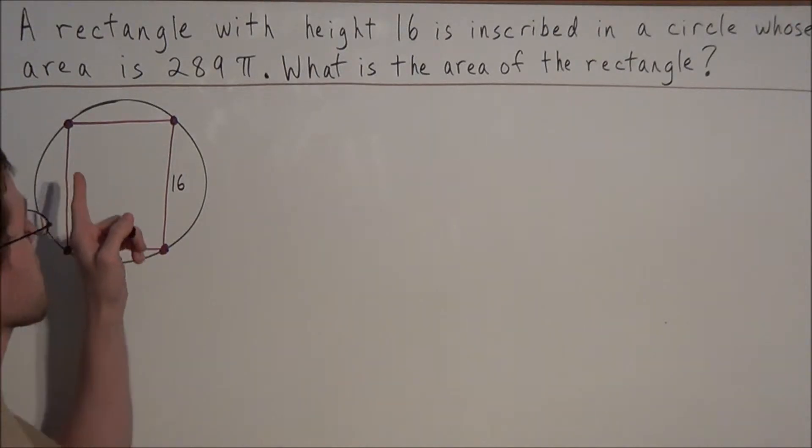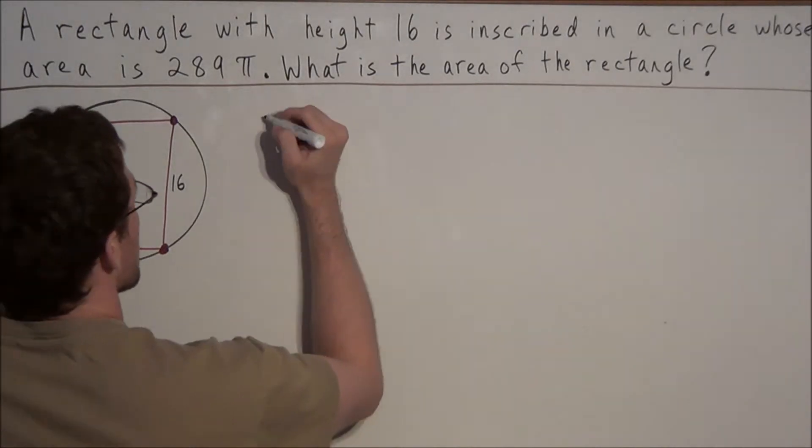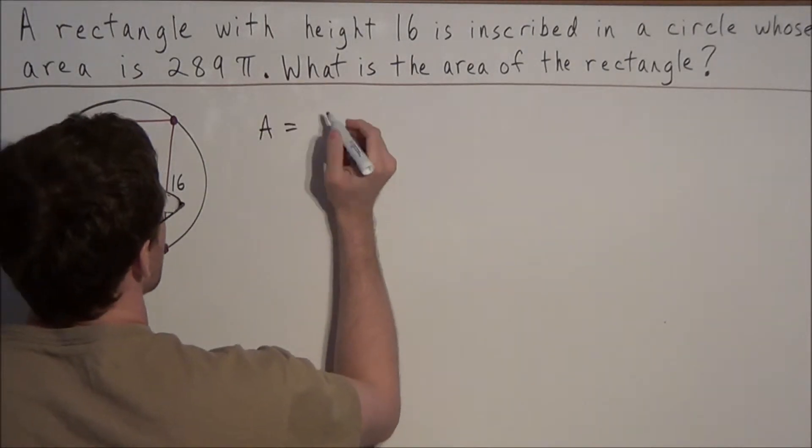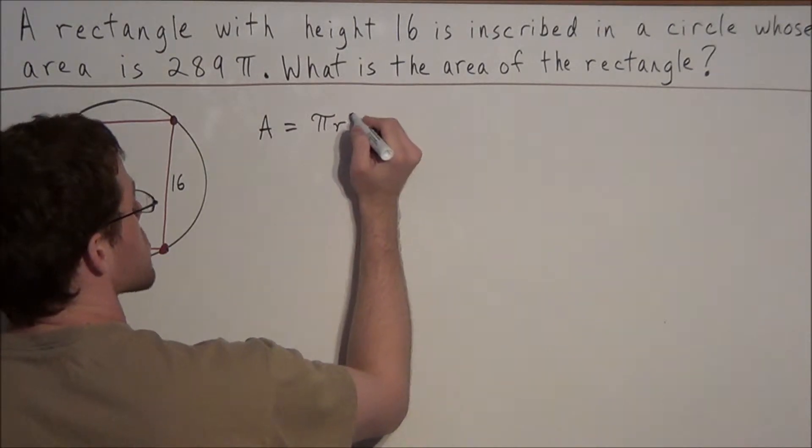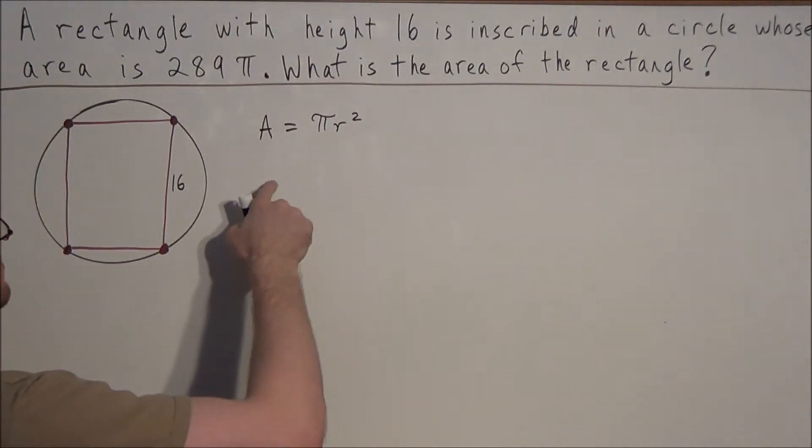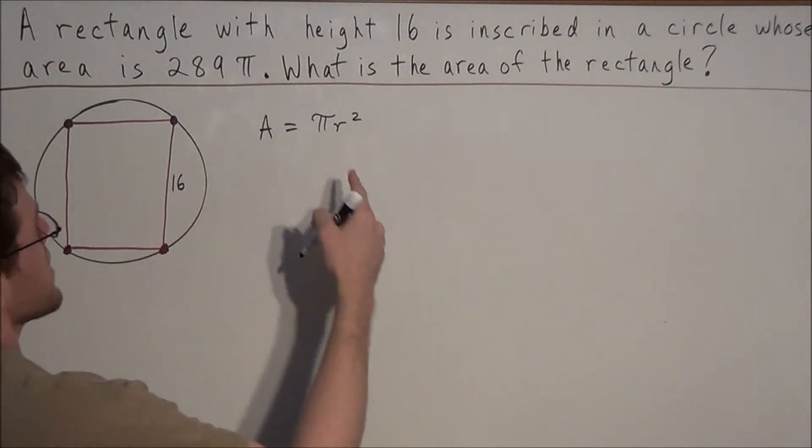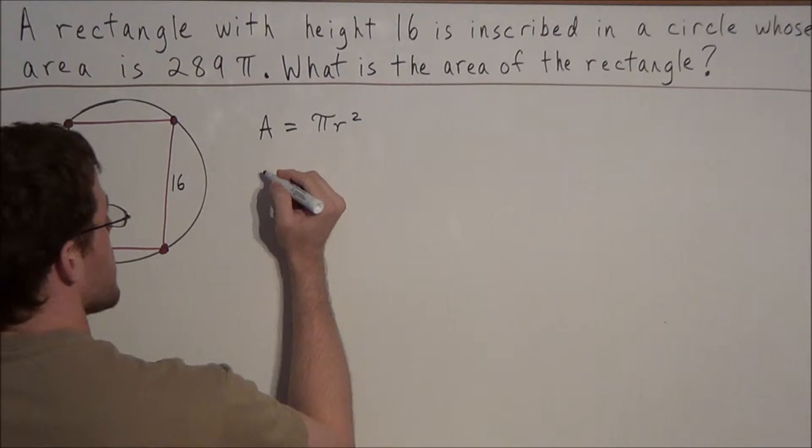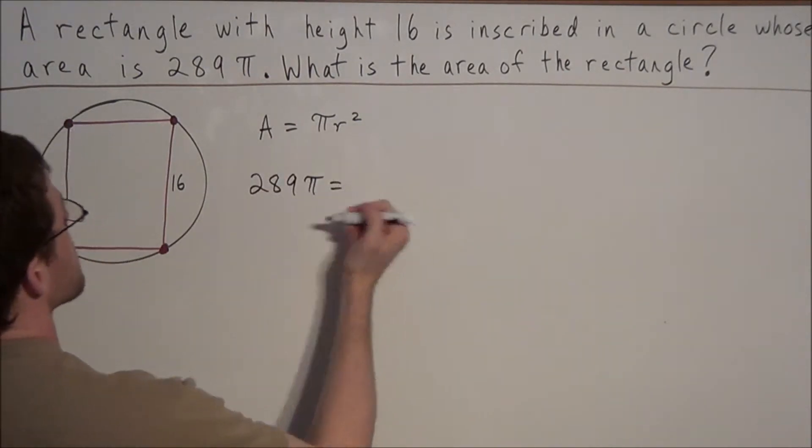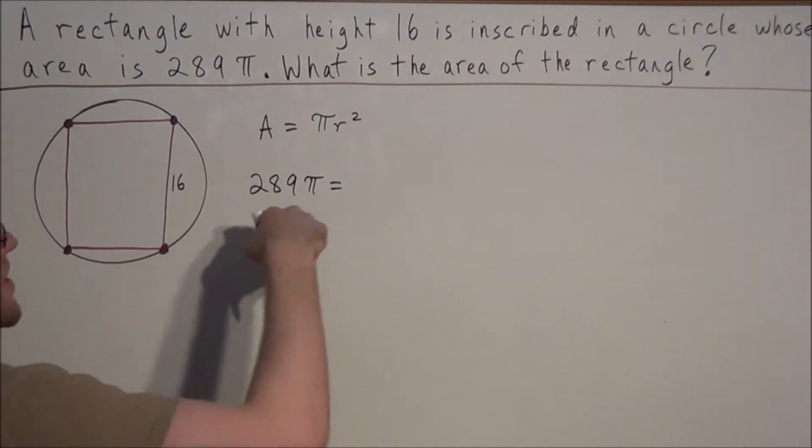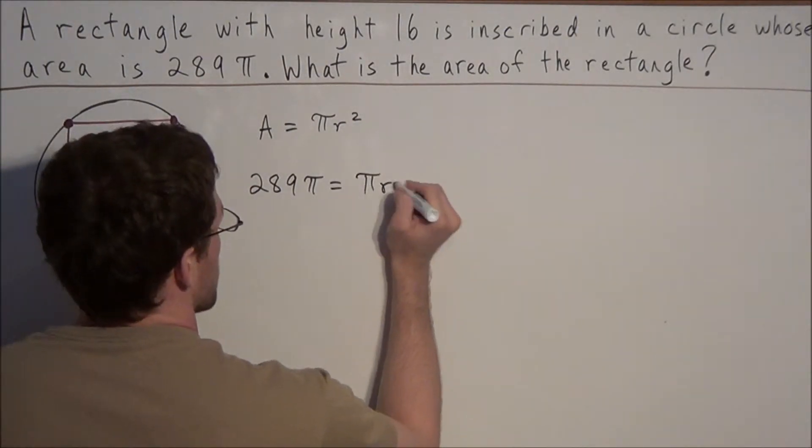Now we're also told that the area of the circle is 289π. Well, in general, and this is also on the reference sheet, we know that the area of the circle is πr². So what we could do is substitute the area for 289π. That is, we're going to replace the letter A with 289π, because we were told that the area of the circle is 289π. And now we still set this equal to πr².